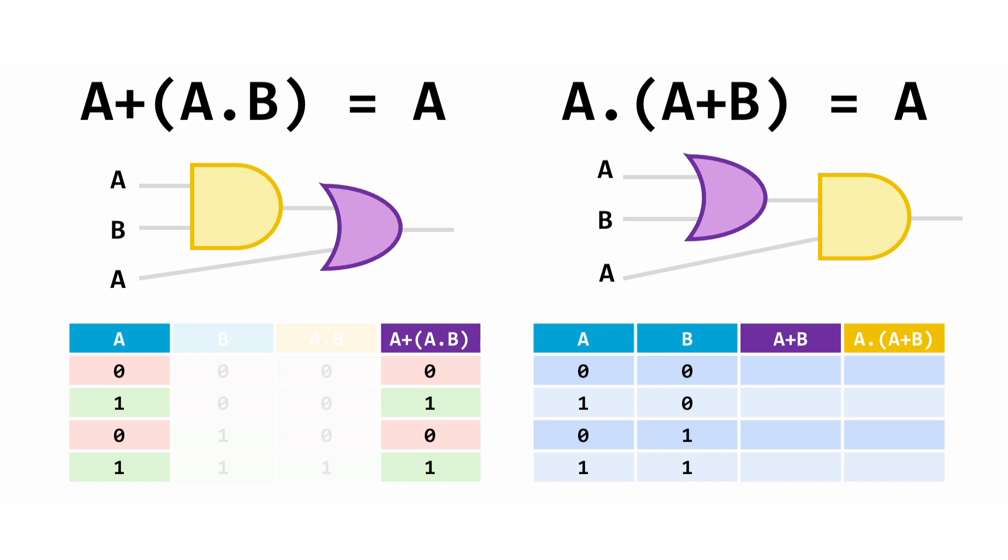Therefore the rule is true and we can replace all that costly circuitry with a cheaper cable. And most importantly, your expression in the exam can blast through simplification. But what about the right hand expression where the AND and the OR gates are switched?